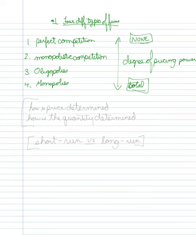Throughout all these different types of firms, we're going to be looking at how the price is determined, how the quantity is determined, and once we have that, how things exist in the short run versus the long run.